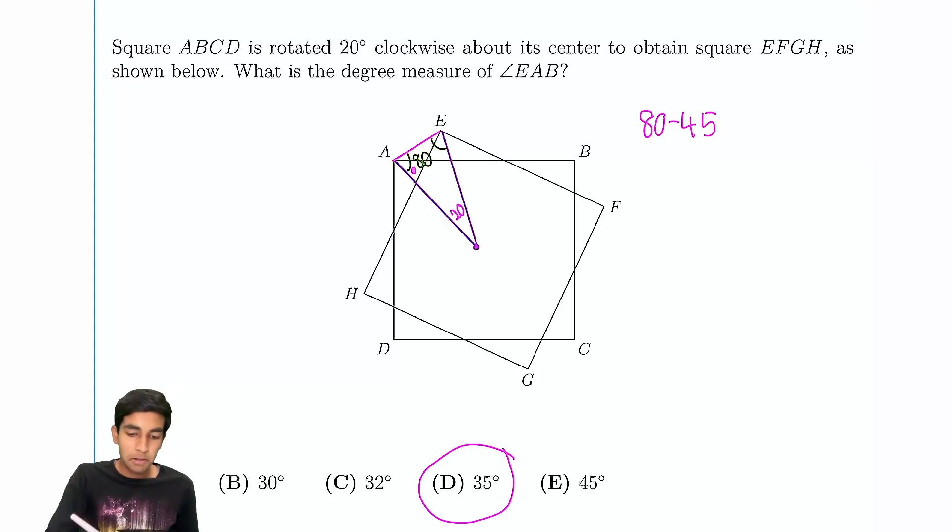So a simple problem for the key trick is just realizing the isosceles triangles and then subtracting 45 from 80. Hope you enjoyed!